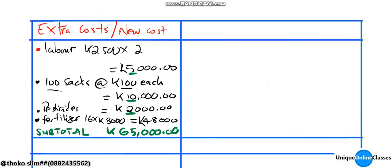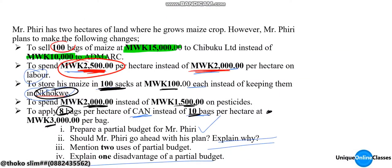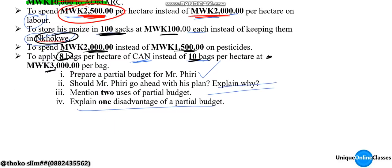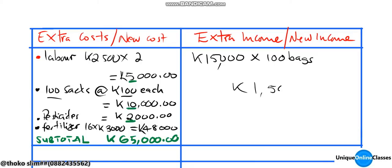Next we need to find the extra income, which is the new income. He would like to sell 100 bags of maize at 15,000 kwacha per bag, so new income equals 100 bags times 15,000 kwacha, which equals 1,500,000 kwacha.